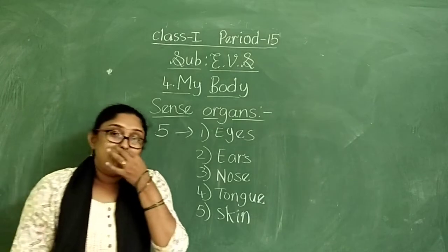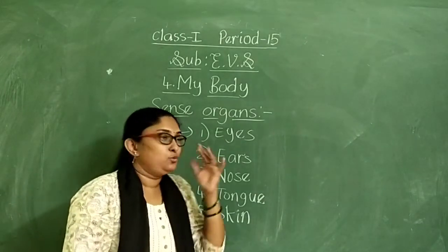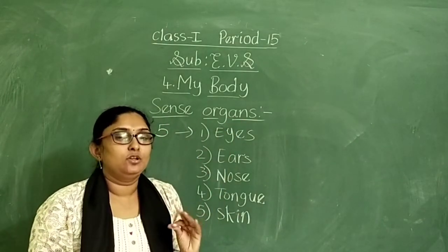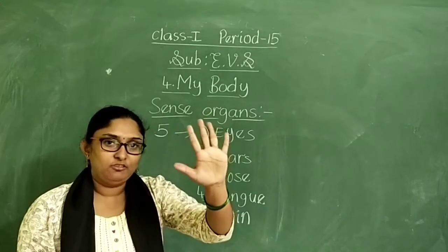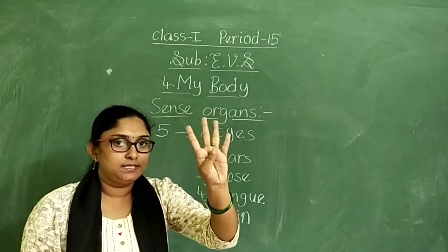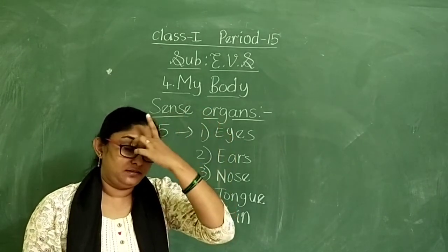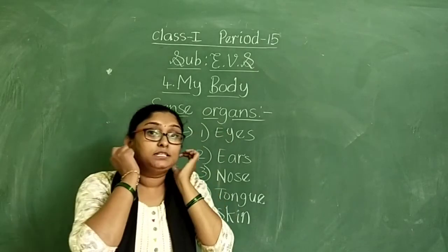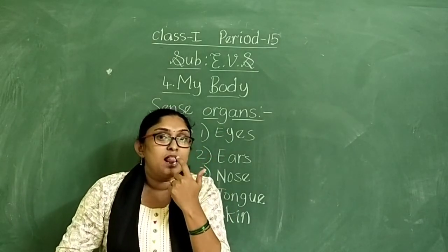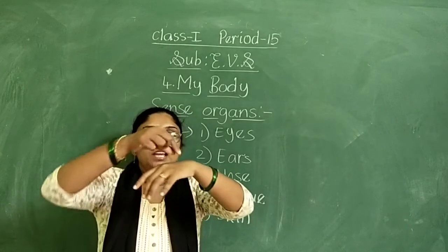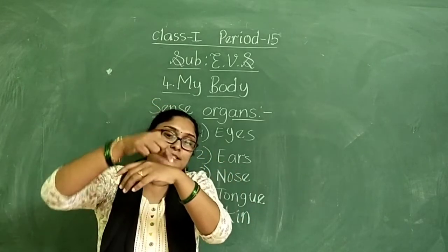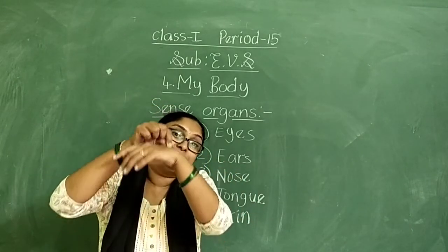I will tell the use of these five sense organs. We are having five sense organs — eyes, ears, nose, tongue, and skin. Skin means our outer covering — skin.